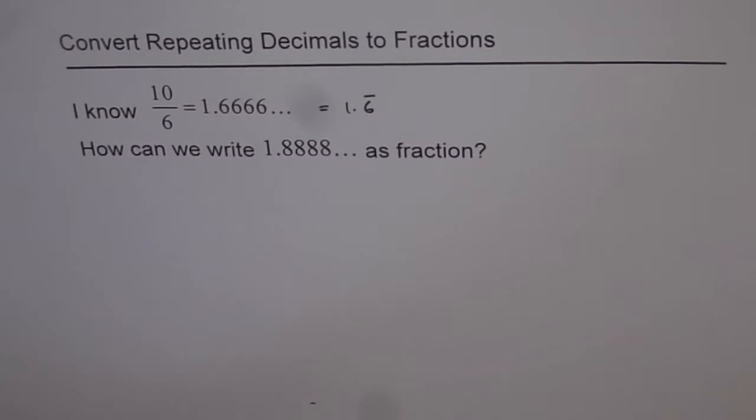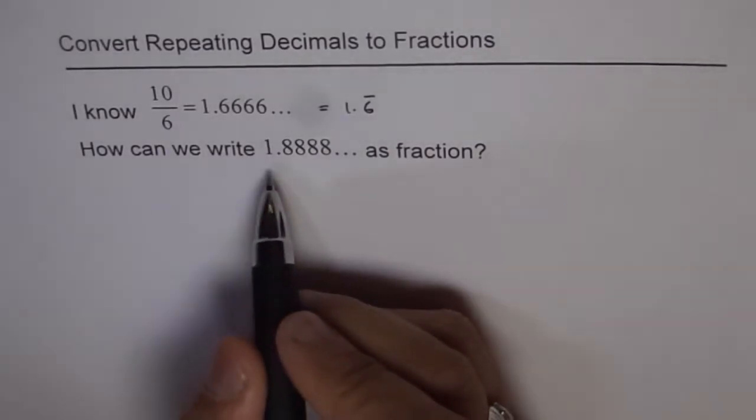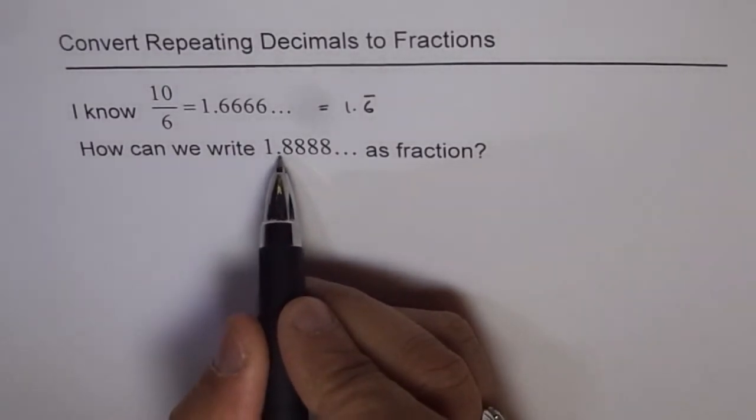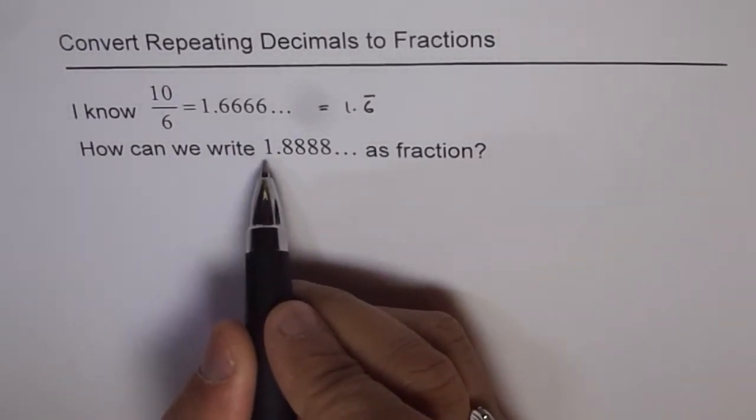This is a very interesting example, similar to what we've already done. How it's different is that we have a number 1 before the decimal place. Earlier we had zeros.